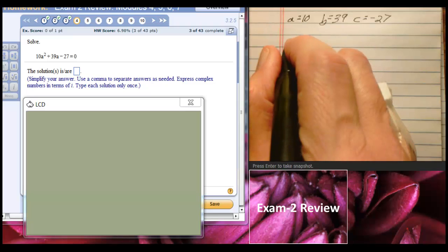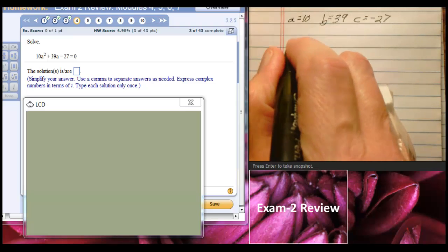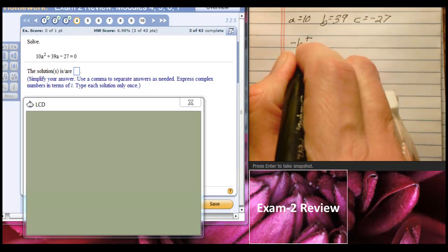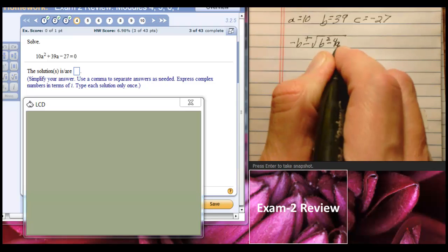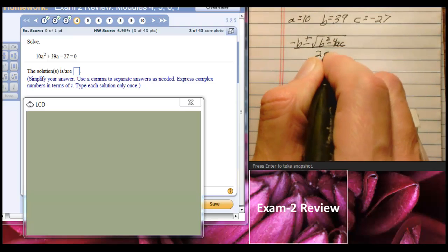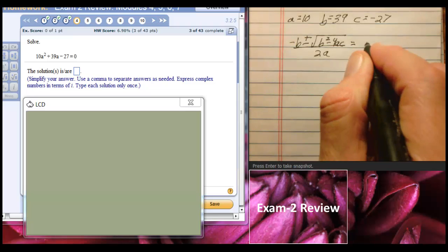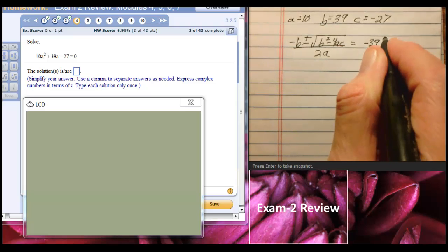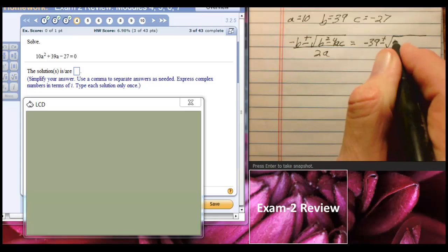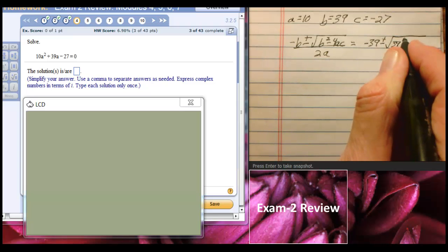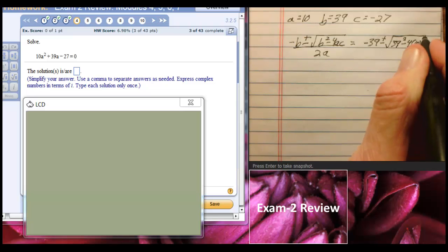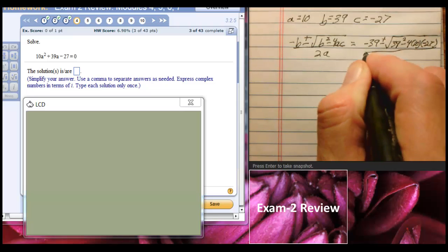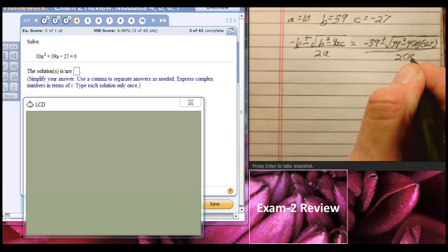So here we're looking for the letter A, but ignore that. We've got negative B plus or minus the square root of B squared minus 4AC all over 2A. So we will have negative 39 plus or minus the square root of 39 squared minus 4 times 10 times negative 27 all over 2 times 10.